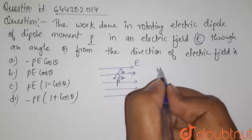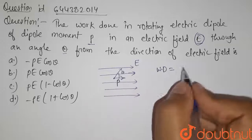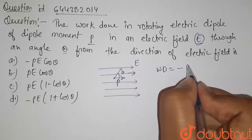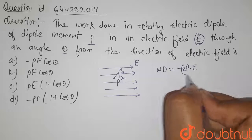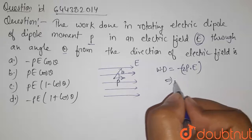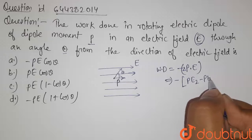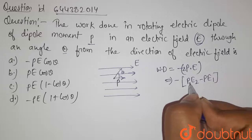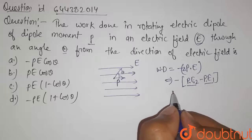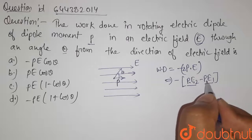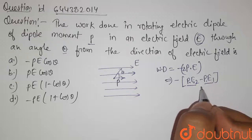The work done in rotating this dipole by angle theta will be given by the negative of the change in potential energy. That means negative of PE2 minus PE1, where PE is the potential energy.